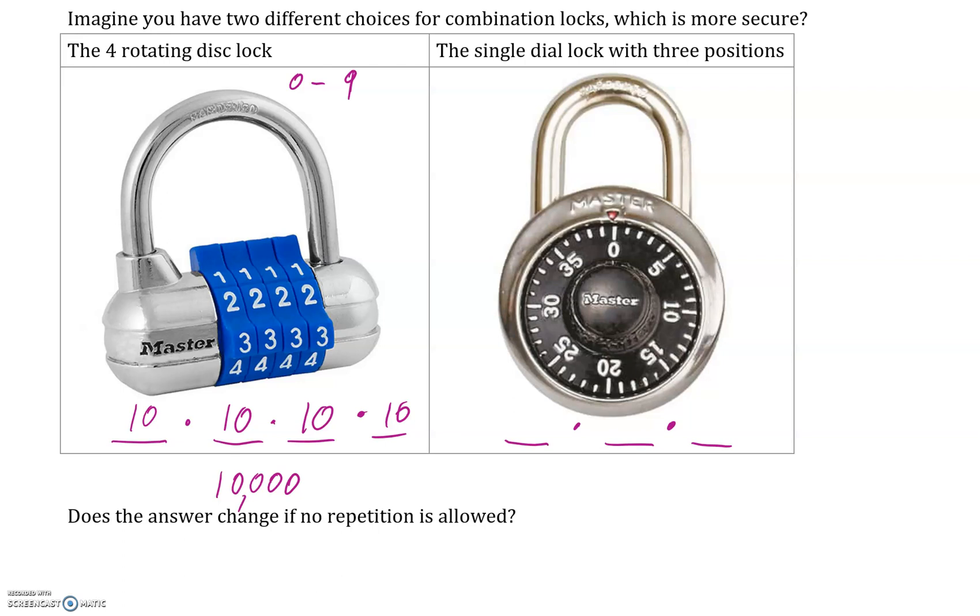But here, we have forty combinations. Forty, forty, forty. We do that three times, and we have one, two, three. And then four times four times four, so sixteen times four, so sixty-four. And we have sixty-four thousand possible combinations. So this is obviously one way of just telling which lock is more secure.